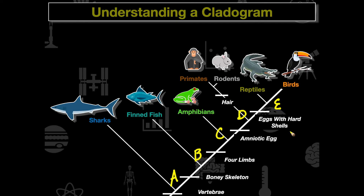We can label the nodes A, B, C, D, and E. For example, where is the common ancestor between reptiles and birds — A, B, C, D, or E? We see a divergence occur at node E, so the common ancestor of reptiles and birds is represented by E. For primates and amphibians, tracing down the cladogram, their common ancestor is represented by node C.